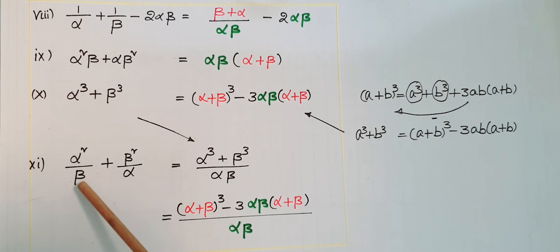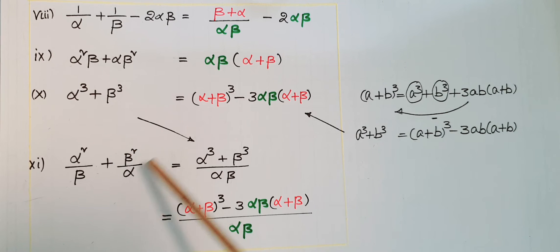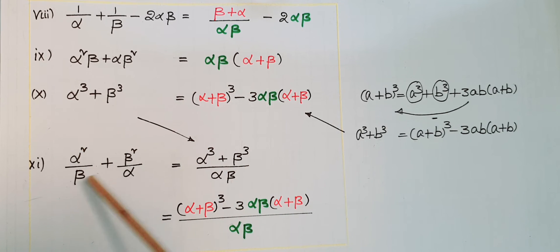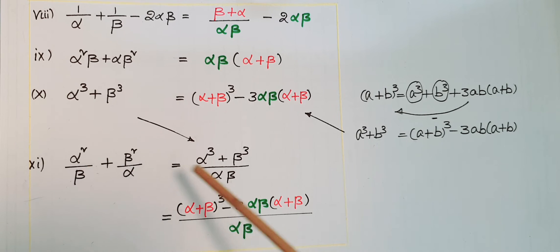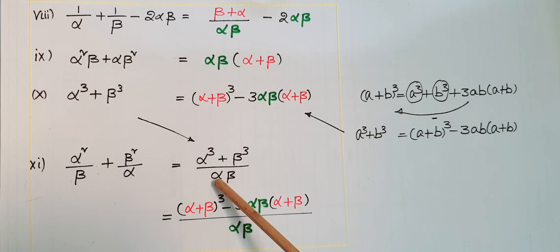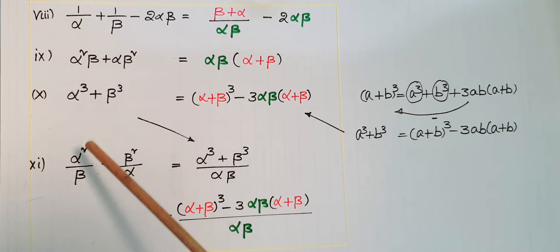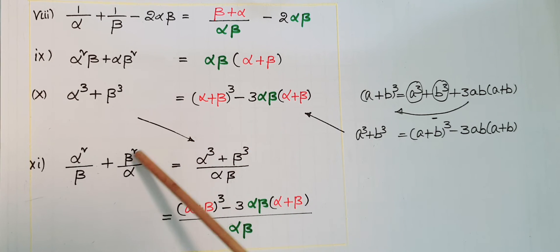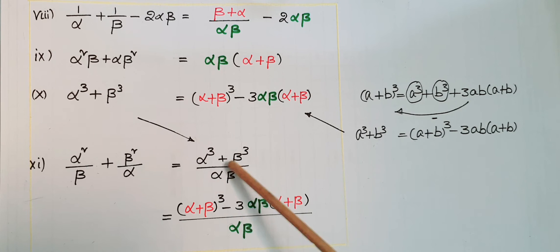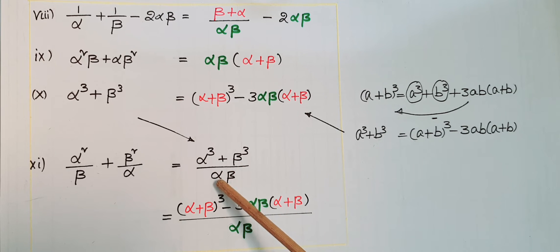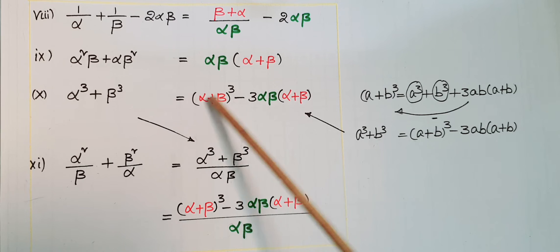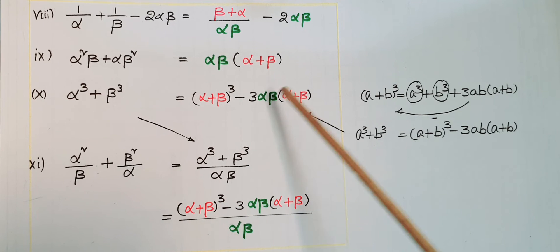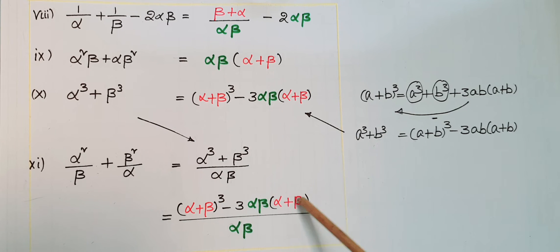Next, α²/β plus β²/α: take LCM of beta and alpha, which is alpha·beta. The numerator becomes alpha³ plus beta³. So the result is (alpha³ plus beta³) divided by alpha·beta, and again alpha³ plus beta³ equals (alpha+beta)³ minus 3·alpha·beta·(alpha+beta), all divided by alpha·beta.